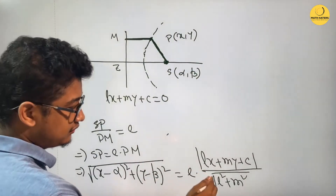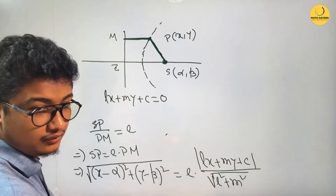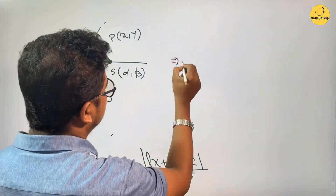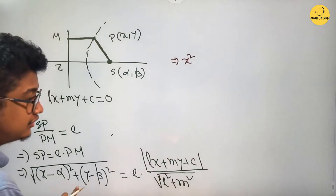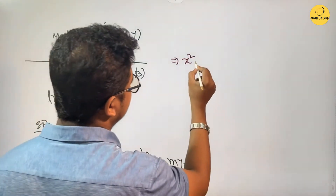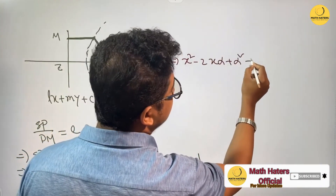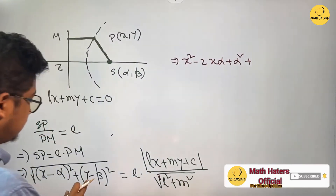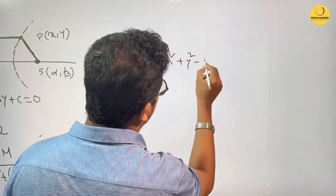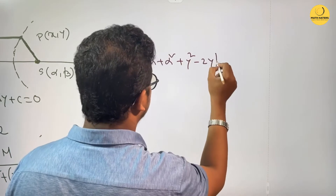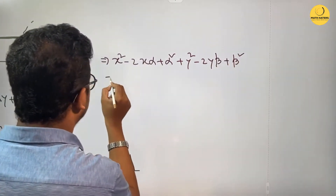This is what we have to do with the square root. See: x squared. This is a minus 2 square root. x squared minus 2x·alpha plus alpha squared plus y squared minus 2y·beta plus beta squared.